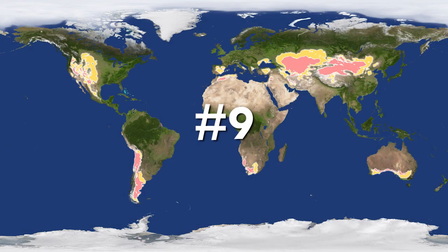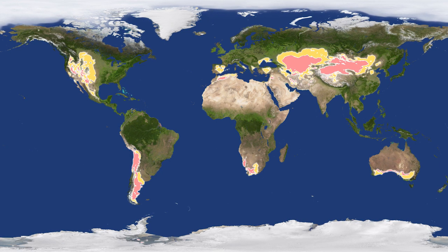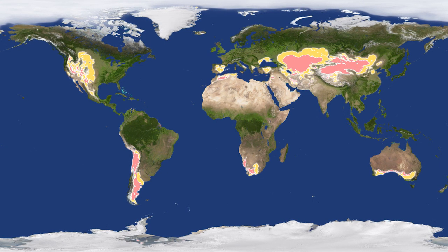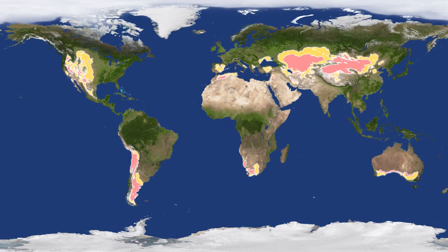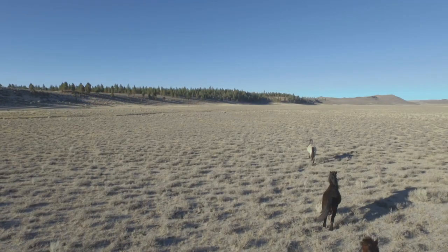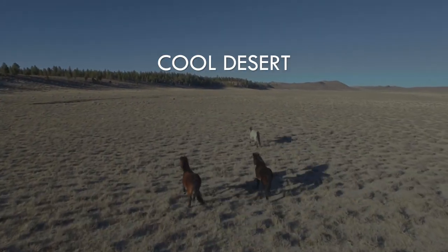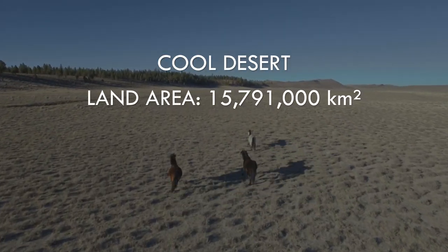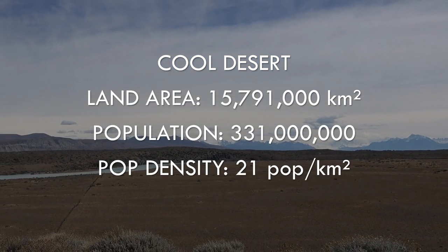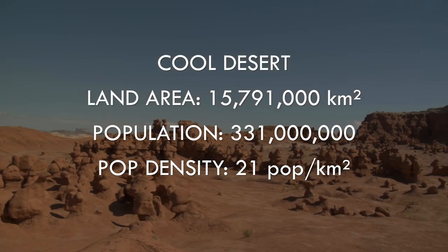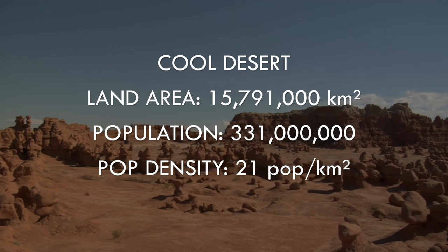At number 9, with just over 20 people per square kilometre, we increase our population density again by at least an order of magnitude, with the inhabitants of the cool desert regions deep within the northern continents and on the dry sides of mountains. With arid conditions combined with freezing winters, it's no surprise that this is the least hospitable climate zone outside of the polar regions as measured by population density. Still, the total population does number a third of a billion, and so these vast regions are home to a significant proportion of Earth's population.